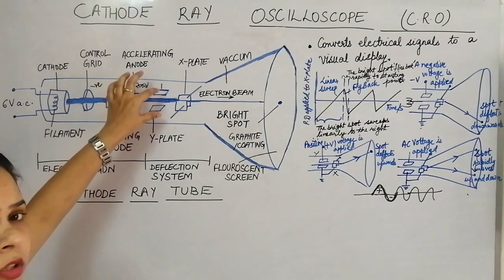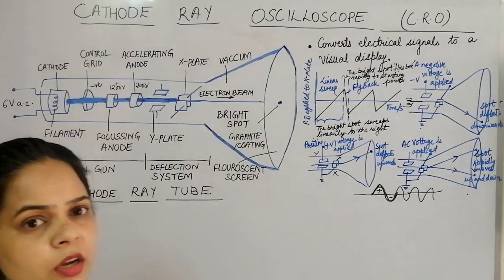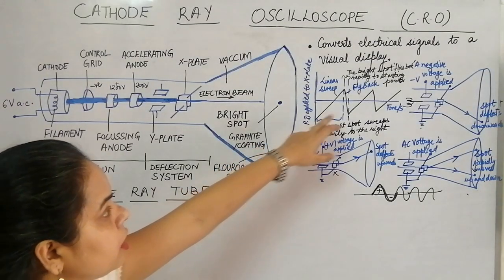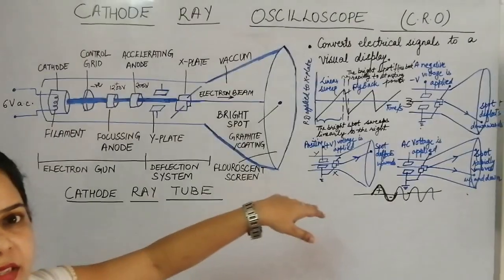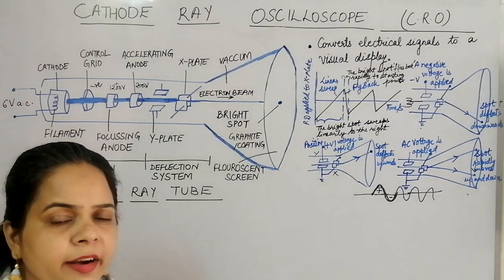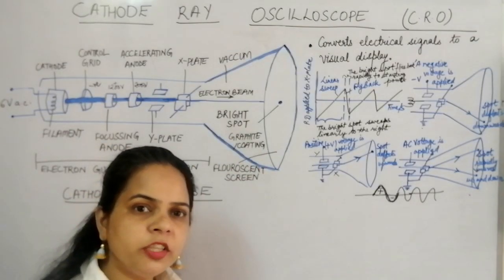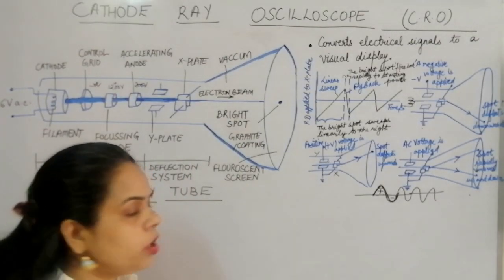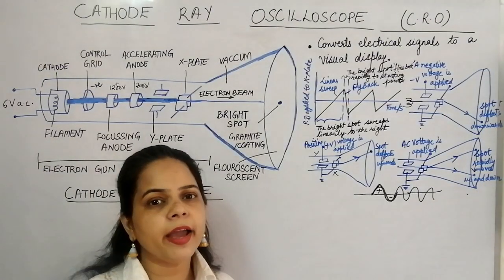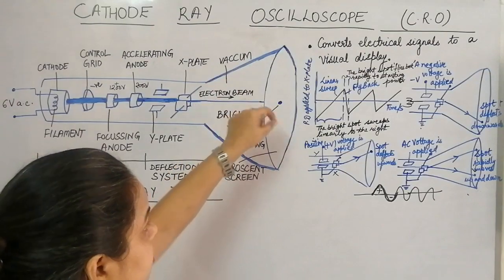When no voltage is applied to either the X or Y plates, the electron beam strikes exactly at the center of the fluorescent screen. If voltage is applied to the X plates instead, the spot moves left and right. A positive voltage on the X plate moves the spot to the left, and a negative voltage moves it to the right.